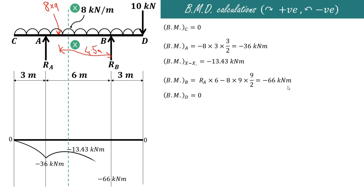Using these values we draw the bending moment diagram. At C and D it is zero; at A it is minus 36 kilonewton meters; at section XX it is minus 13.43 kilonewton meters; at B it is minus 66 kilonewton meters; and at D it is zero. In this way we can draw the shear force and bending moment diagram for a simply supported beam with overhang on both sides carrying a point load at the right hand end. Thank you very much for watching.